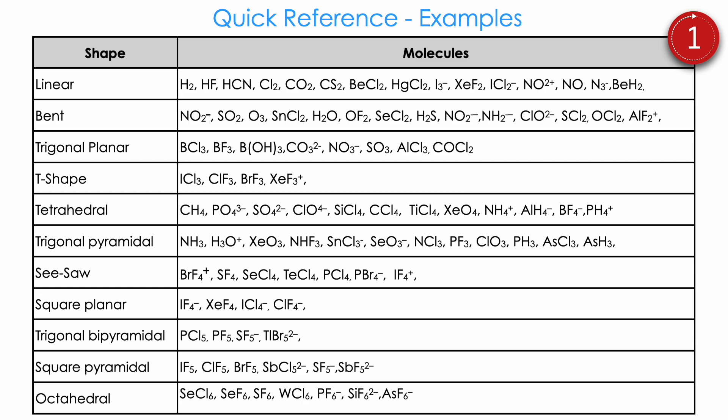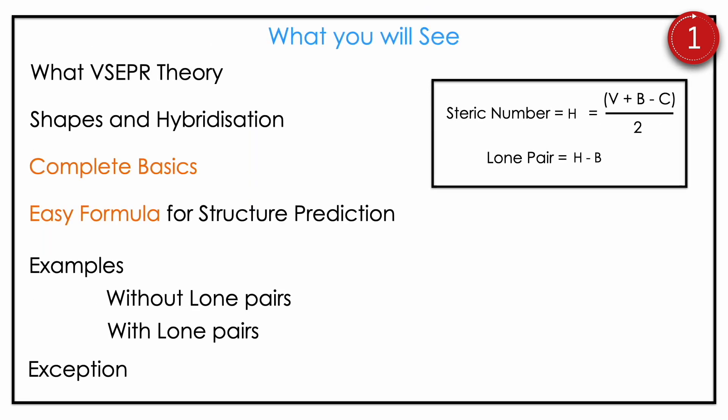Here I give quick references — for future you can work it out and find answers by our method. All molecules obey our method, and most of the common molecules are given, so make use of it. What you will see in this video is: what is VSEPR theory and shapes, hybridization and complete basics, an easy formula for structure prediction using the steric number and lone pair calculation, examples with and without lone pairs, and a few exceptions. Study in that order — it will be very easy.